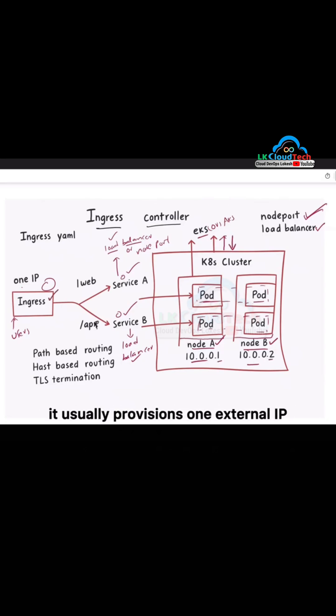When you create an ingress resource, it usually provisions one external IP or DNS endpoint through the ingress controller. All incoming traffic to your cluster flows through this single endpoint. And ingress uses path-based or host-based routing based on the rules defined in ingress.yml. For example, slash web goes to service A and slash app goes to service B.